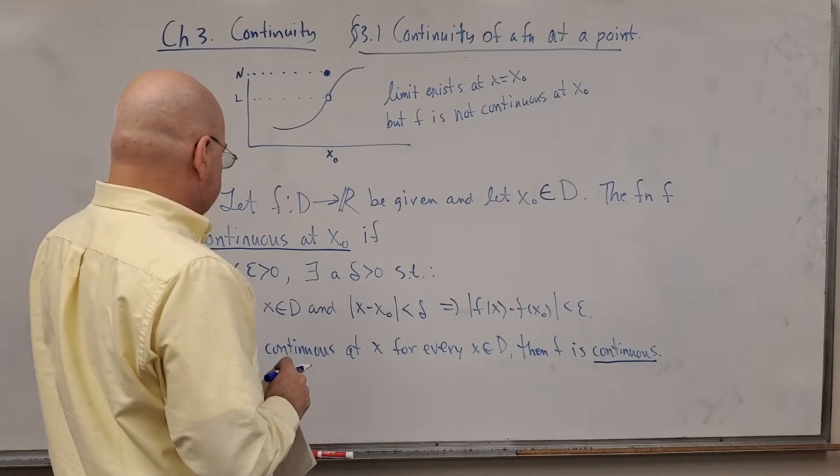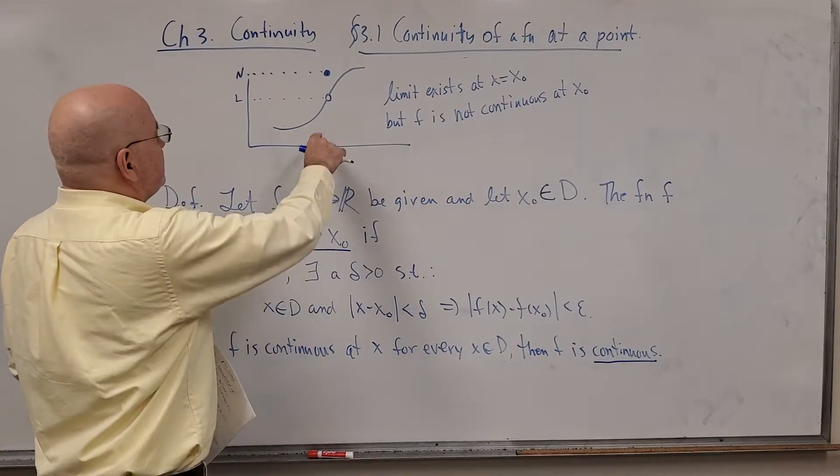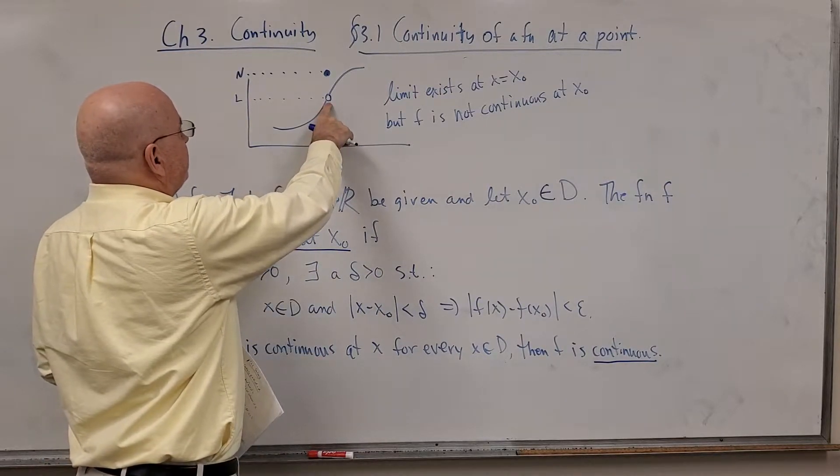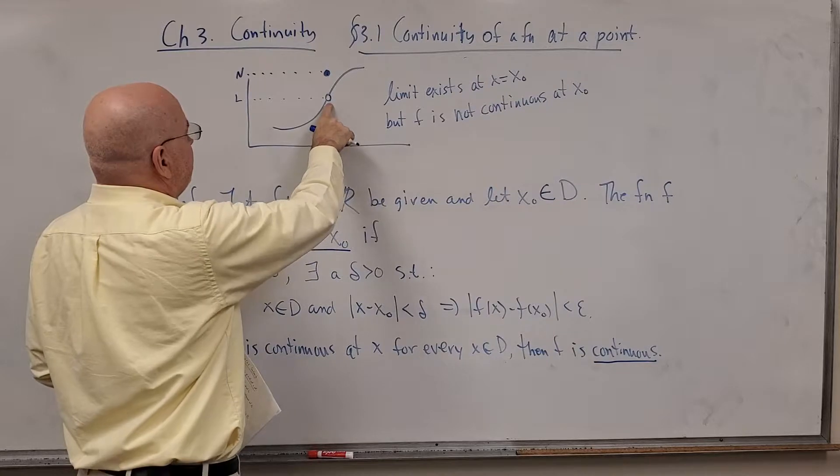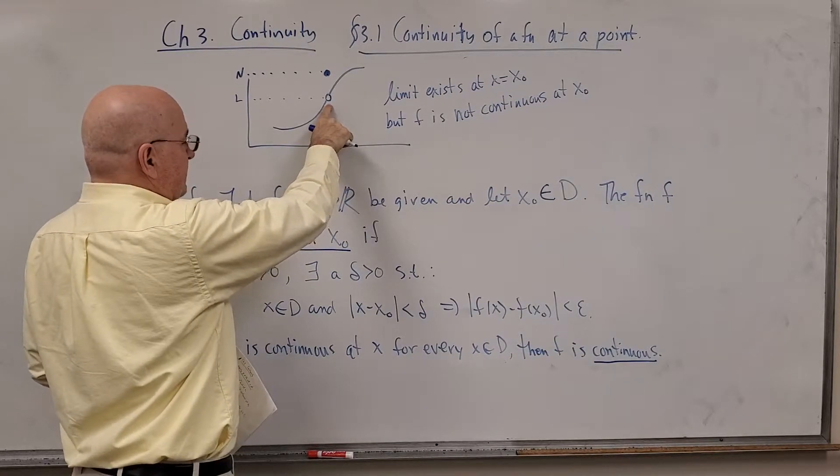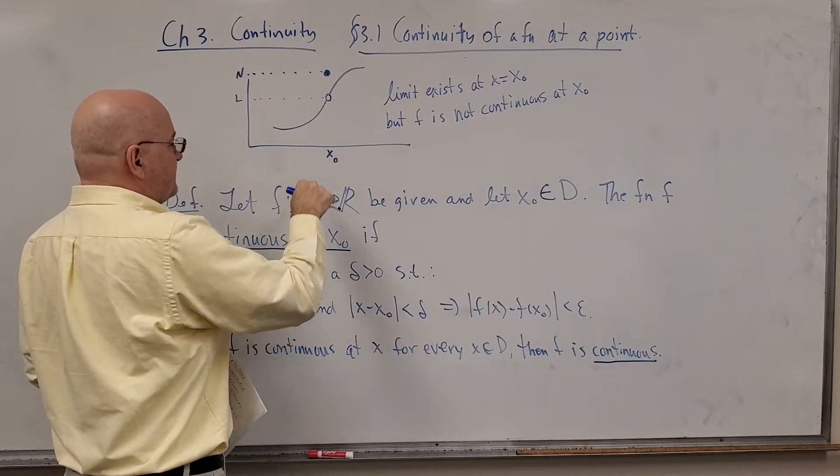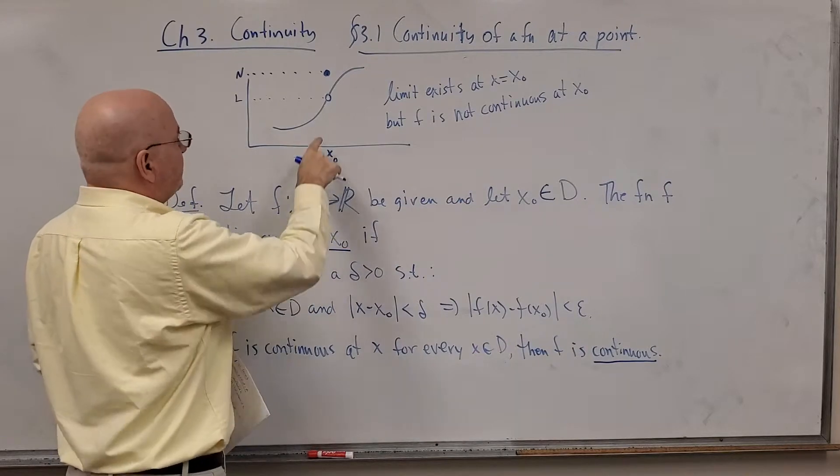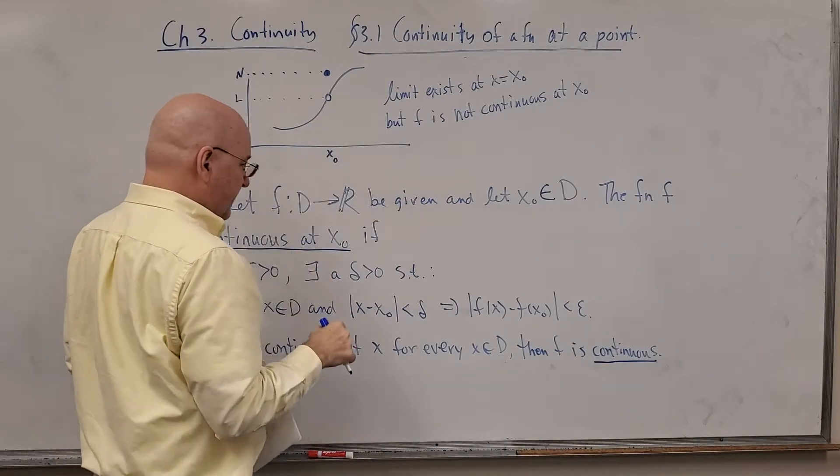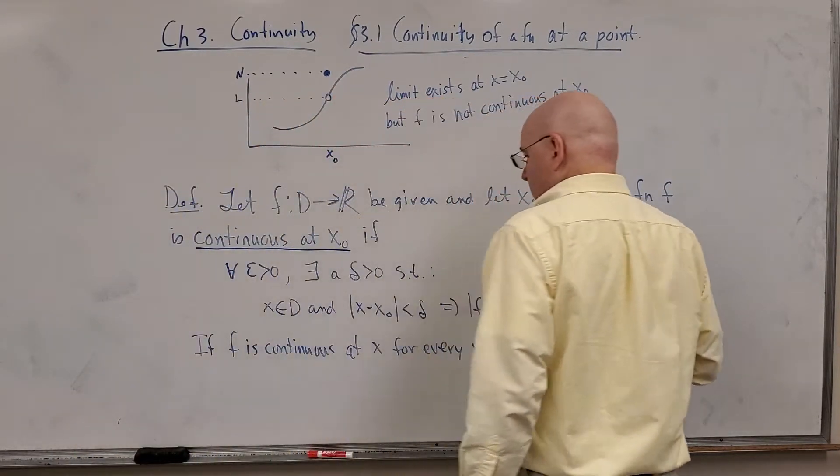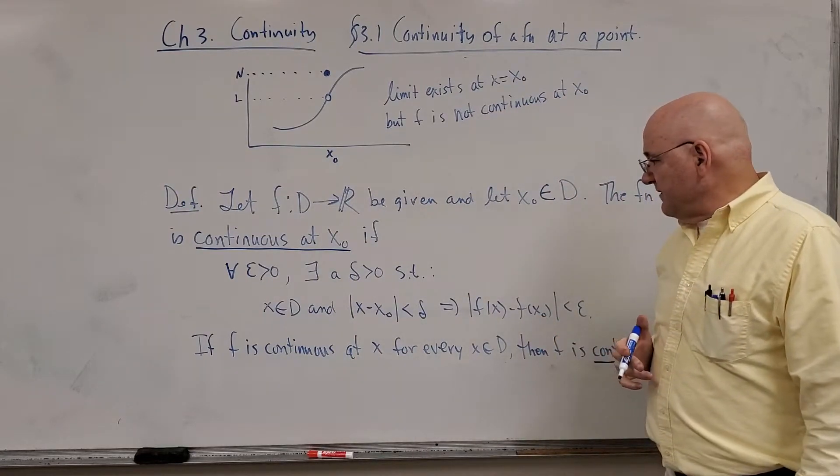So why does this limit exist at this point in the picture? Why is it not continuous? What in the definition prevents that from being defined as continuous at that point? Any thoughts, any ideas about that?